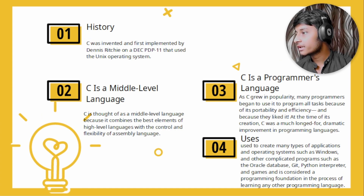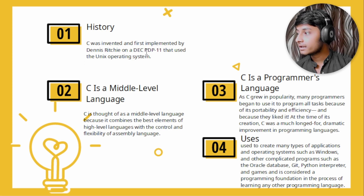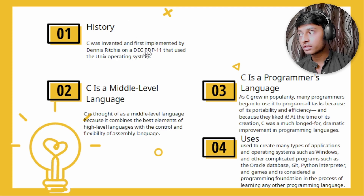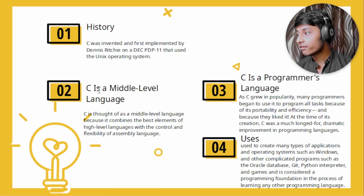First of all, let's see a little history. C was invented and first implemented by Dennis Ritchie on DEC PDP 11, which used the Unix operating system. Dennis Ritchie used it. C is a middle-level language.